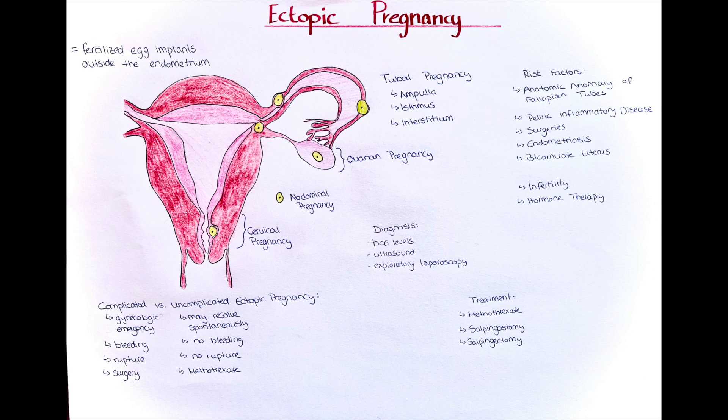In patients with severe or prolonged vaginal bleeding, we may observe signs of anemia clinically and in the complete blood count. When an ectopic pregnancy is confirmed, we must check the patient's blood type to identify patients who might need Rh immunization. We may also perform a transvaginal ultrasound, which is considered the best initial imaging test for determining the location of the pregnancy.